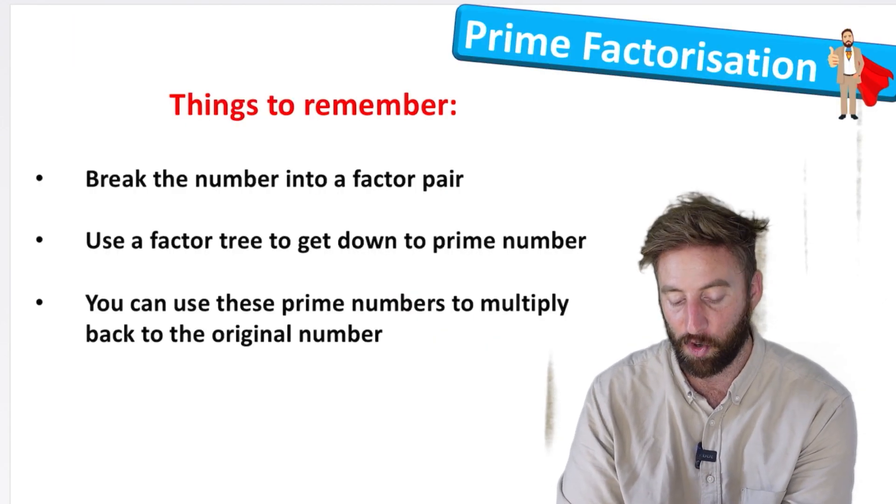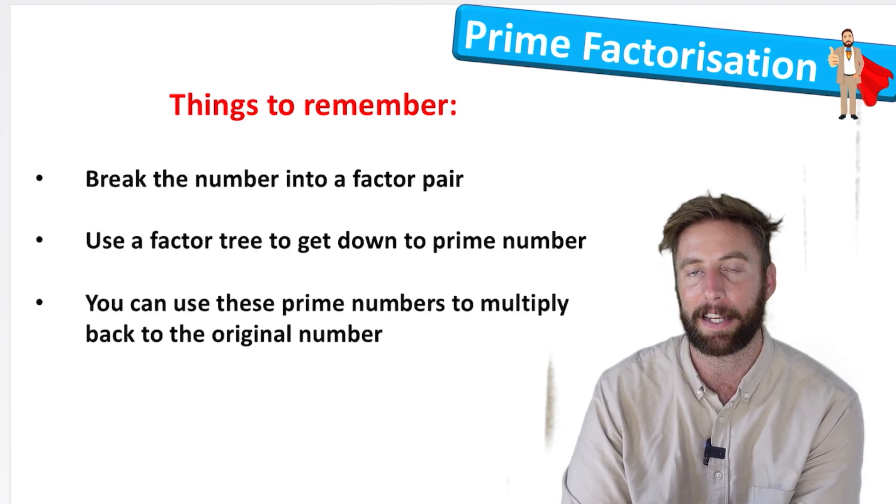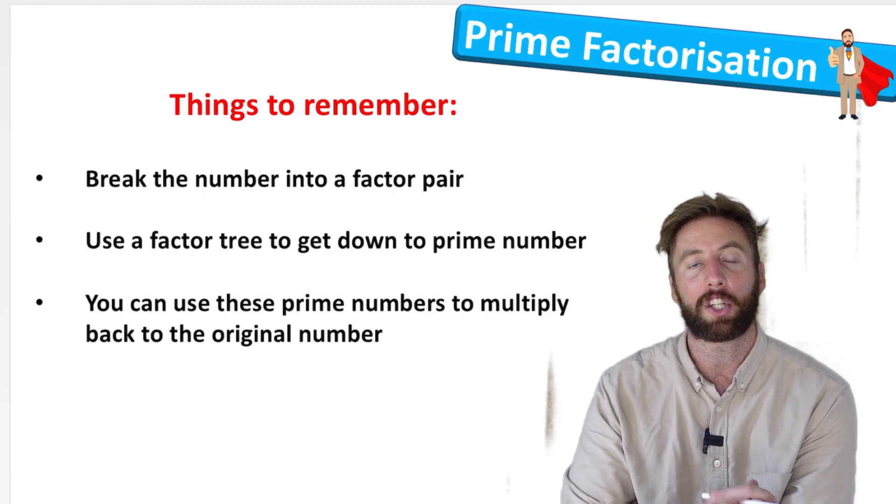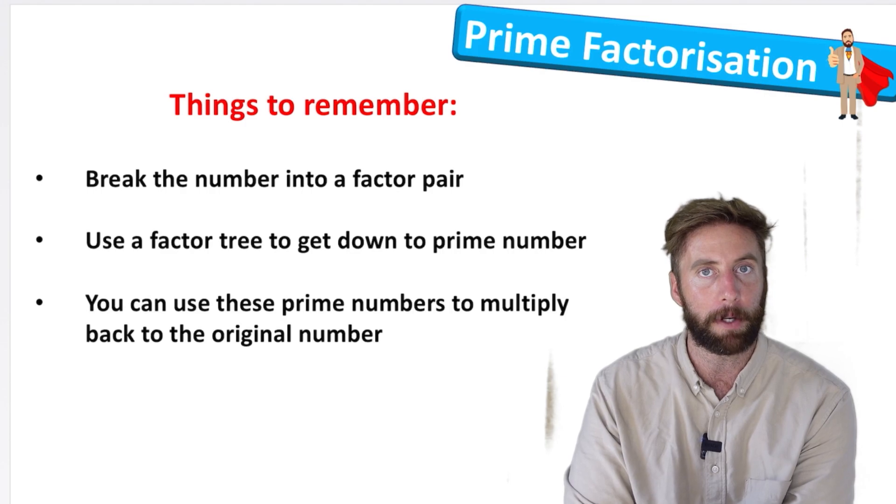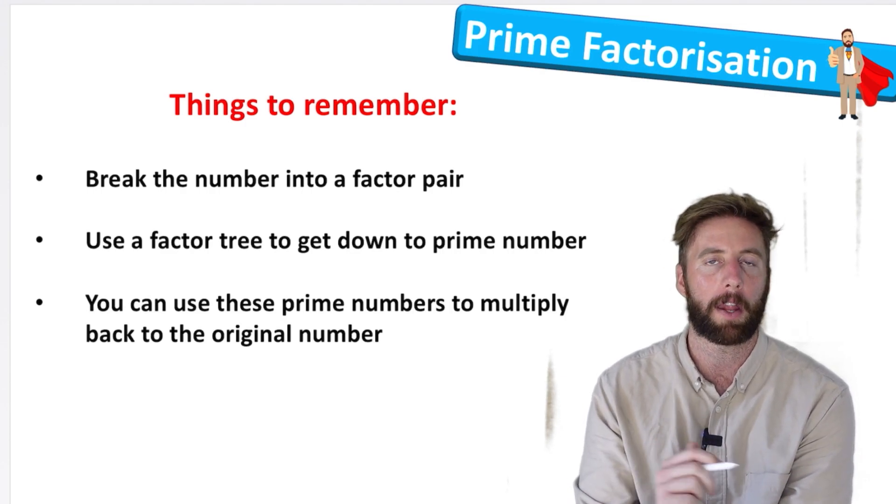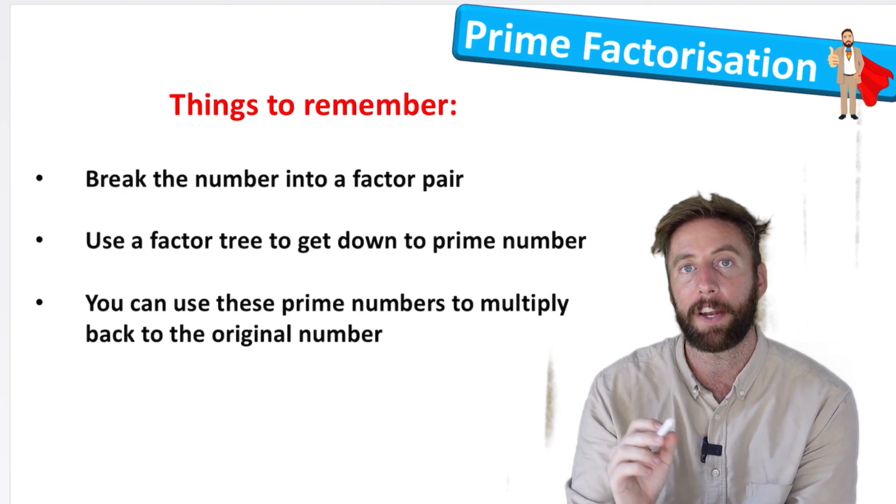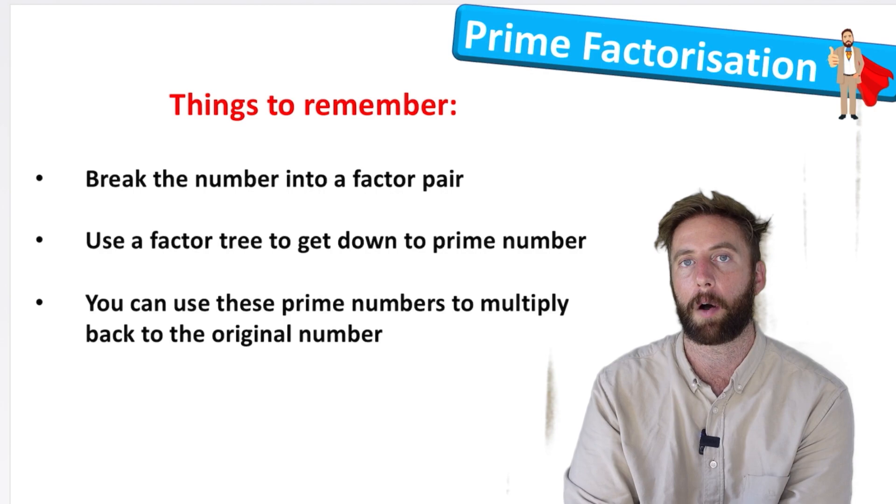Okay, let's think about things to remember then. So we must always break our numbers into factor pairs. And then we're going to use a factor tree to go all the way down to prime numbers. And then the trick is that we can use these prime numbers to multiply them back together. And we should end up with the original number. That's how we know we've finished our factorization and we've got to our prime numbers.